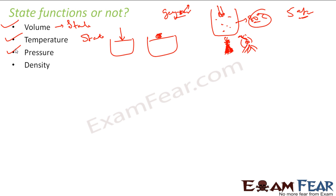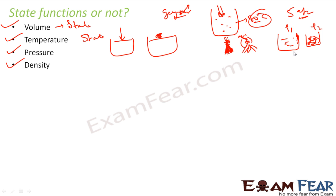Density is also a state function. You don't care how you got this density. For example, you have milk with some density and you want to make it a little thicker — more dense. Do you care whether you use a microwave oven, LPG gas, or wood to heat it up and increase the density? You don't care. You just care about the final density. So density is also a state function.